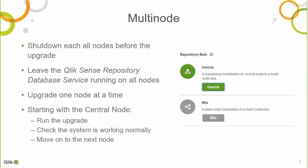On a multi-node environment, it's a bit more complicated. The key thing we want to avoid is two different versions of Qlik Sense trying to synchronize with each other. Upgrading between versions generally involves some changes to the underlying databases, and they are simply not designed to be synchronizing across versions. So what you should do is shut down each node, but leave the database service running.